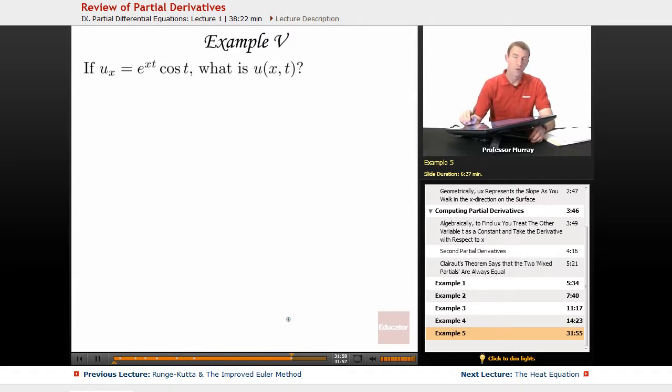So in our example 5, we're going the opposite direction from taking partial derivatives. This time we're given a partial derivative, and we're asked to figure out what the original function could be that produced that.